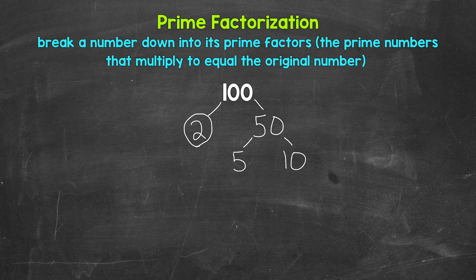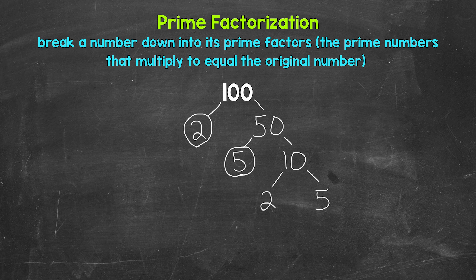Now 5 is a prime number, so we are done here — we can't break that down any further. 10 is a composite number; we can break 10 down. So let's think of factors. 2 and 5 are factors of 10. 2 times 5 equals 10, so let's break 10 down into 2 and 5. Both 2 and 5 are prime numbers, so we are done here and here.